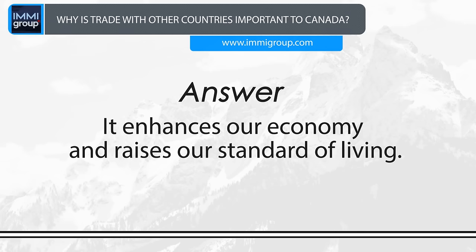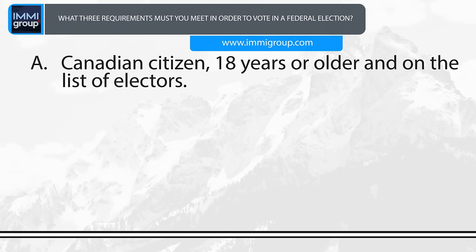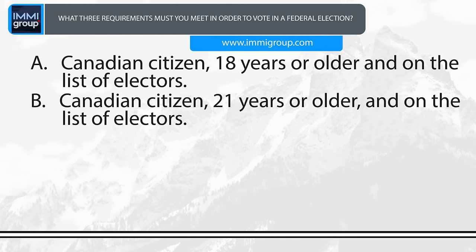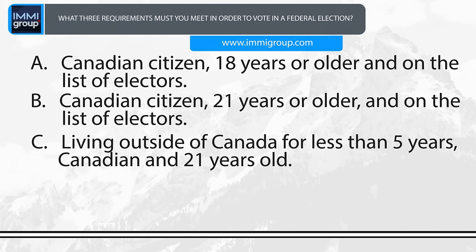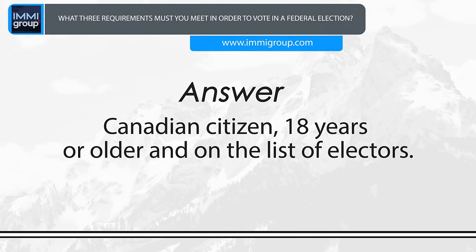What three requirements must you meet in order to vote in a federal election? A. Canadian citizen, 18 years or older, and on the list of electors. B. Canadian citizen, 21 years or older, and on the list of electors. C. Living outside of Canada for less than 5 years, Canadian and 21 years old. D. Working for the Federal Government, Canadian Forces or other organization, 21 years and Canadian. Answer: Canadian citizen, 18 years or older, and on the list of electors.